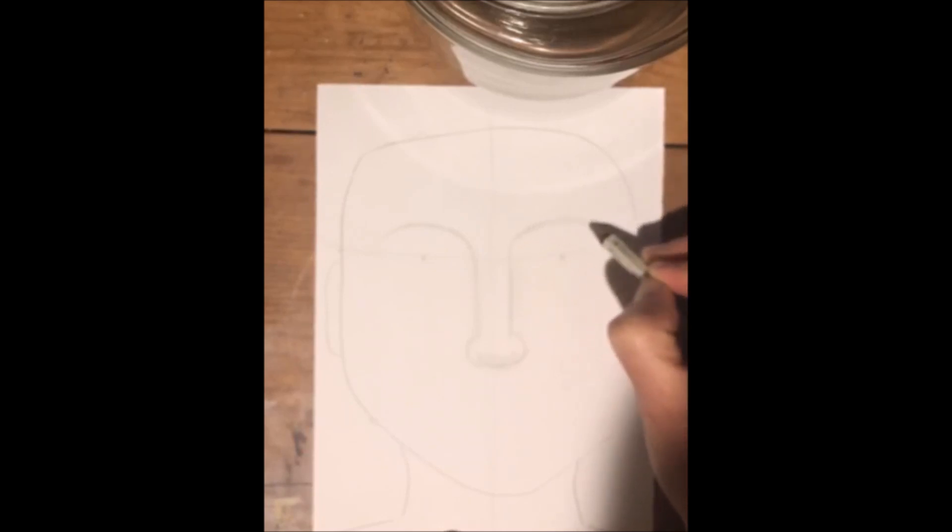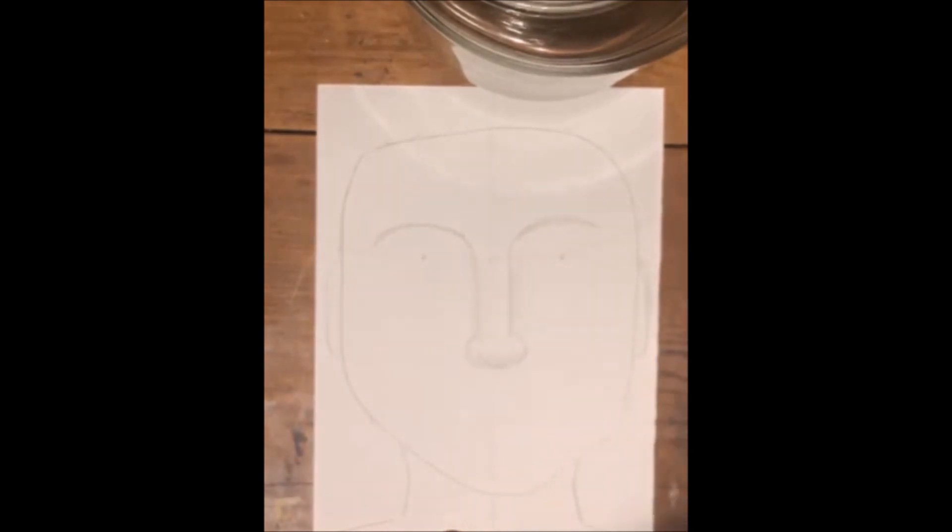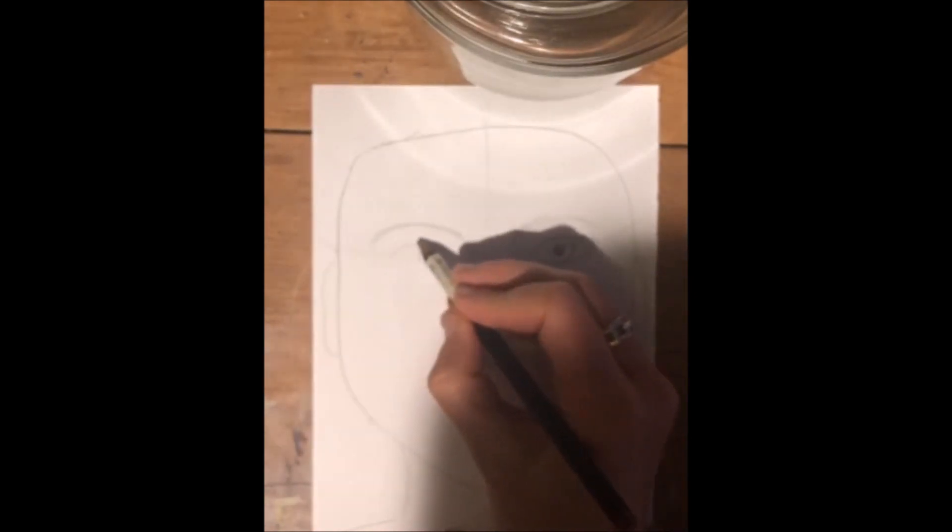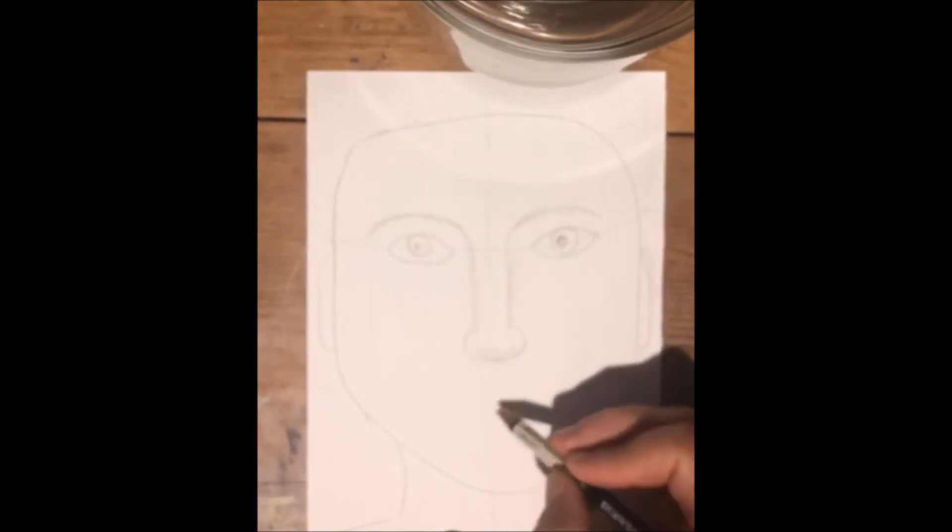All right, then we're going to start on eyes, the same as what we did before: heel, circle, circle—that's black for the pupil—smiley face under.